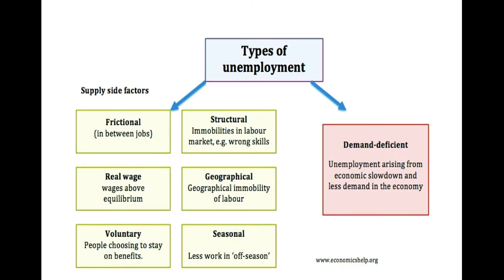Technological unemployment occurs when advances in technology lead to more automation of work, causing workers to lose jobs. Artificial intelligence is a prominent example. There is controversy in this area — as more robots are used for tasks, people start losing their jobs. In 2016, World Bank data predicted that the proportion of jobs threatened by automation in India is 69%, which is another serious problem to deal with.